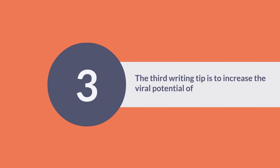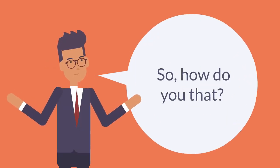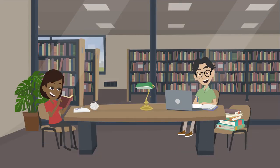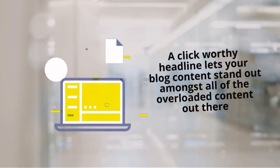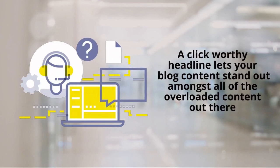The third writing tip is to increase the viral potential of your content. How do you do that? One of the most vital ingredients of any viral blog is a click-worthy headline that immediately grabs your readers' attention. A click-worthy headline lets your blog content stand out amongst all of the overloaded content out there.